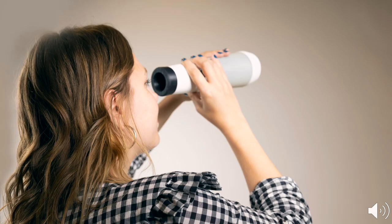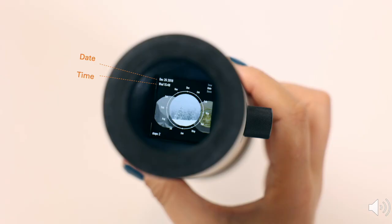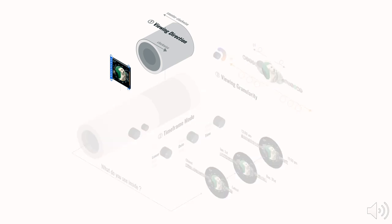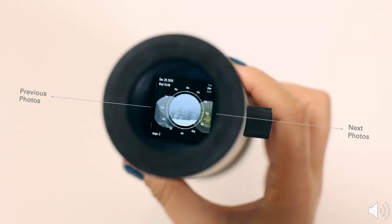To use the scope, simply hold it up and peer inside. You will see a tiny display with a horizontally visualized photo collection. The top left corner shows the timestamp of the central photo. There are three rotational controls in Chronoscope. The primary rotation wheel controls the photo viewing directions, allowing you to navigate among the horizontal photo collection. When you rotate clockwise, the view goes to the right; counterclockwise, the view goes to the left.